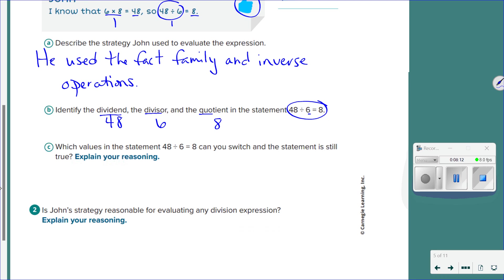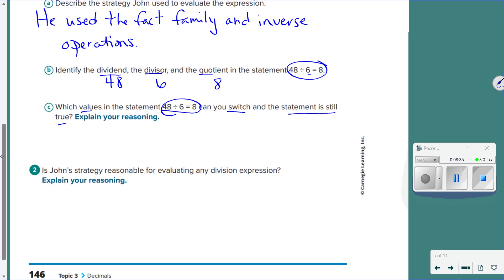Okay. Which values in the statement, 48 divided by 6 equals 8, can you switch? And the statement is still true. In other words, I have to keep it as a division. What values could I switch and still keep it true? Good. So I can switch to 6 and 8, correct? Why?